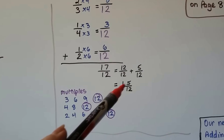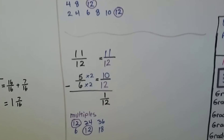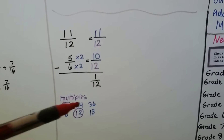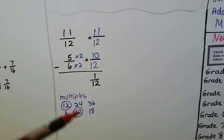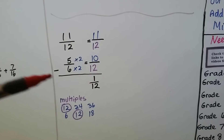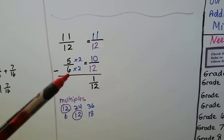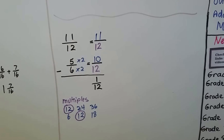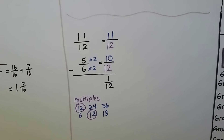Let's try one more: 11/12 minus 5/6. The multiples for 12 and 6 show the lowest common multiple is 12, so 11/12 doesn't need to change — it slides over. The 6 needs to be multiplied by 2 to become 12, so 5 is multiplied by 2 to become 10/12. Subtracting: 11/12 minus 10/12 is 1/12.